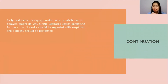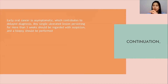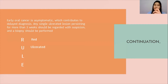Early oral cancer is asymptomatic, which contributes to delayed diagnosis. Any single ulcerated lesion persisting for more than three weeks should be regarded with suspicion and a biopsy should be performed. Remember the mnemonic RULE: R is for redness, U is if it's ulcerated, L is for lump, and E if it extends for three or more weeks.